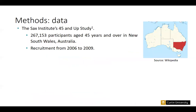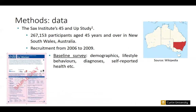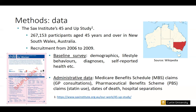We used data from the Sax Institute's 45 and Up study, which is a study of over 267,000 participants aged 45 and above in New South Wales, recruited over a four-year period. There was a baseline questionnaire covering demographics, health and lifestyle behaviours, and health status, linked to hospital separations, the Medicare Benefit Schedule capturing GP attendances, the Pharmaceutical Benefit Scheme, and death records.